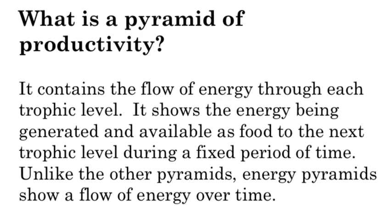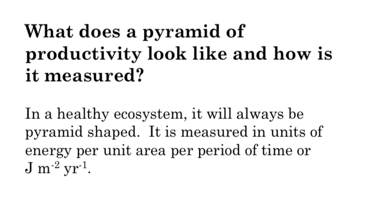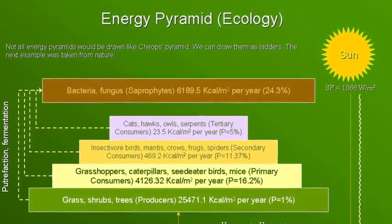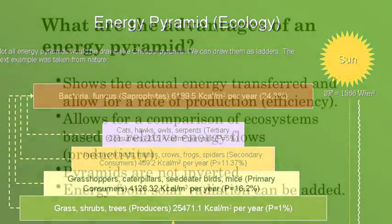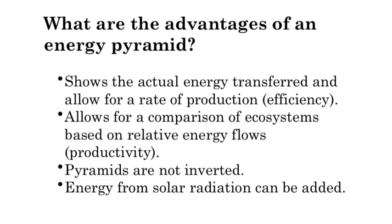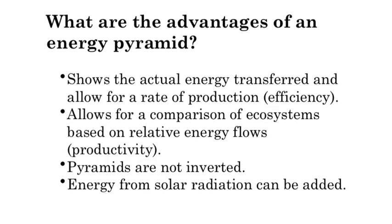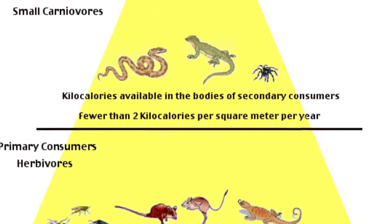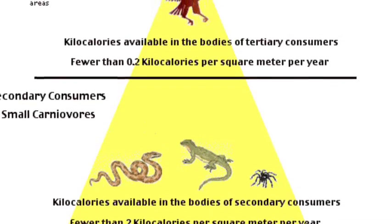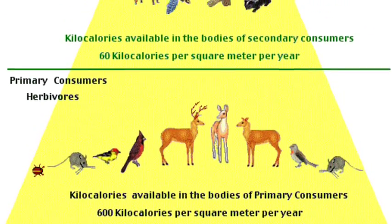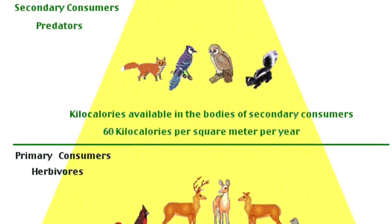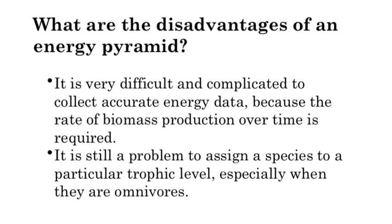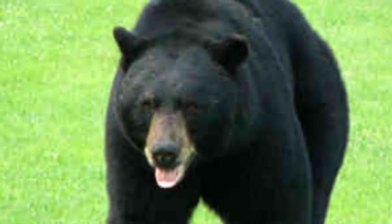This is where we use a pyramid of productivity, which shows how much energy exists at each trophic level in a given period of time. We measure it in joules or kilocalories per area per unit time. The advantage is that it usually looks like the pyramid we're used to if the ecosystem is healthy, it shows how energy is transferred, and it allows us to compare ecosystems. For example, we can compare energy available at each trophic level in a desert versus a deciduous forest, calculate efficiency, calculate productivity, and see which ecosystem is more productive.